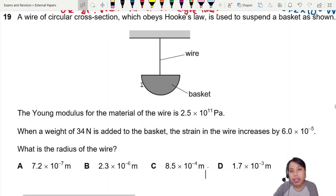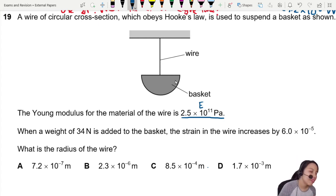Here's a wire with a basket hanging at the end of it. The Young's modulus is given to us. Young's modulus, we usually use the symbol E, tells you how stiff that wire is.